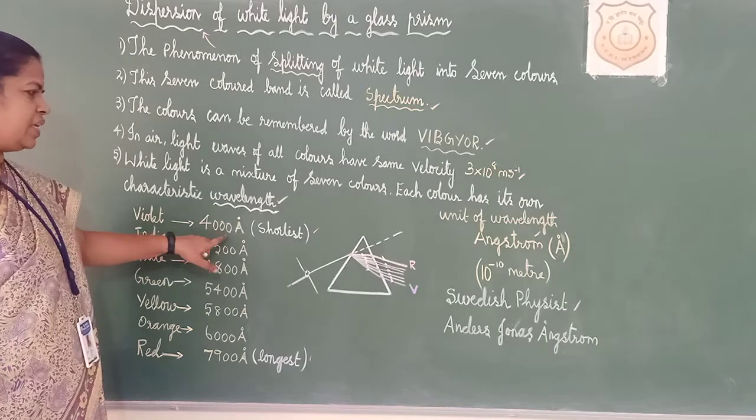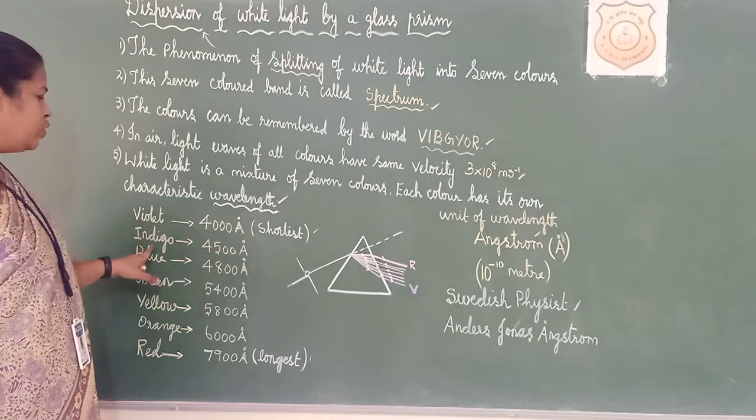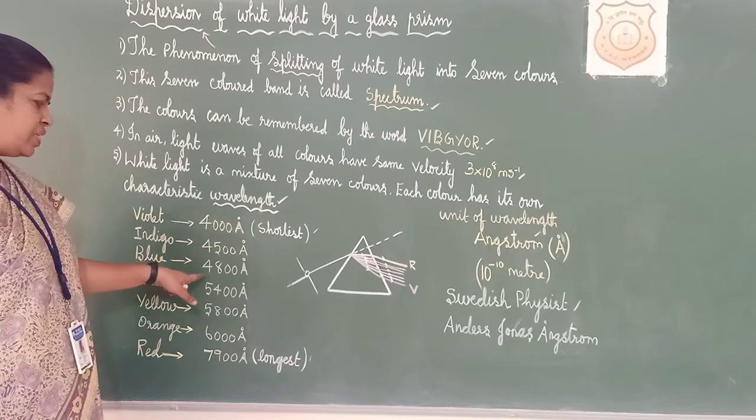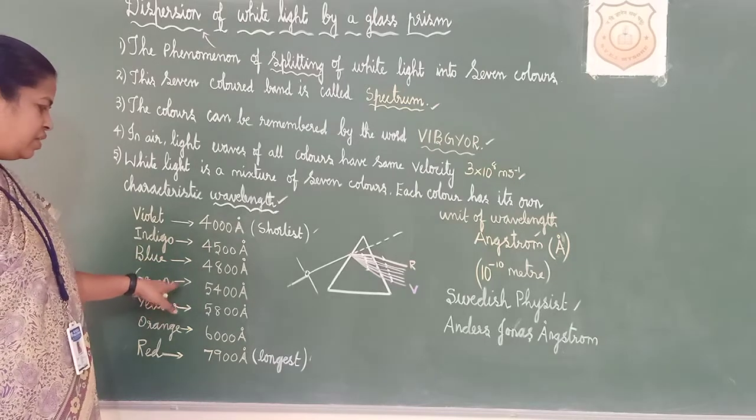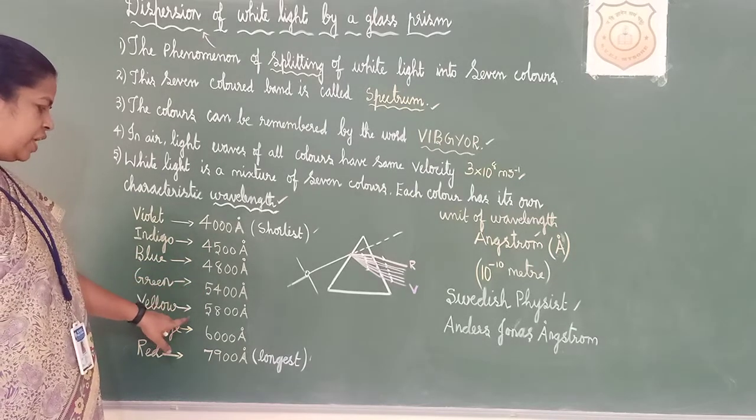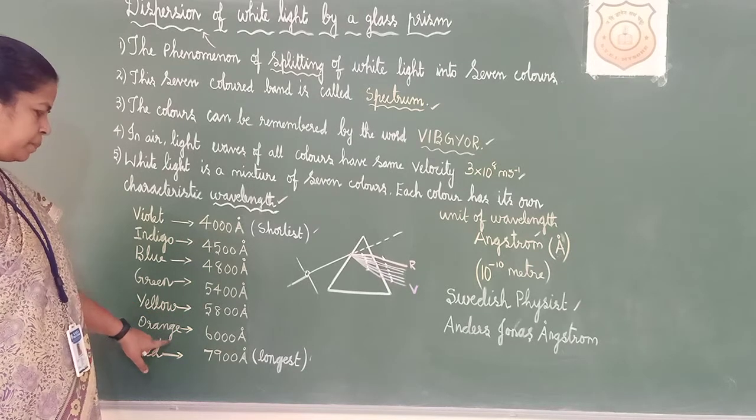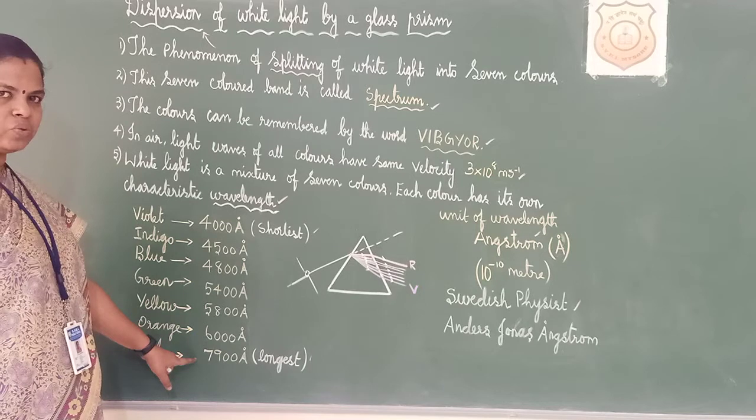Violet is 4000 Angstrom. Indigo, 4500 Angstrom. Blue, 4800 Angstrom. Green, 5400. Yellow, 5800. Orange, 6000. And red, 7900.